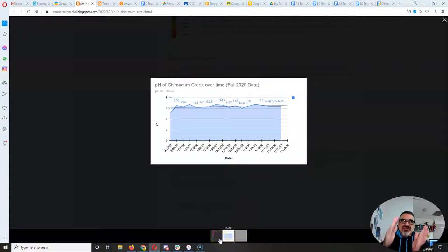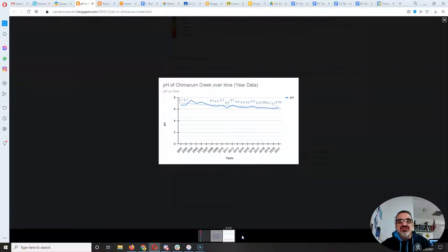And it's still less than 7, which, as you learn from his blog post, anything less than 7 is acidic, and freshwater needs to be a little bit acidic. That's how it is normally, so that's good. It's within the good range.